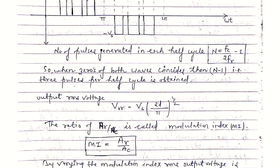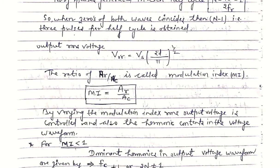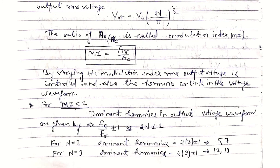The output RMS voltage is V0r = VS multiplied by the square root of the sum of pulse widths (2δ) divided by π over the half cycle, all raised to the power 1/2 for RMS calculation. The modulation index is defined as AR/AC, or equivalently VR/VC — the ratio of the amplitude of the reference wave to the carrier wave. By varying the modulation index, the RMS output voltage is controlled, and the harmonic content in the output voltage waveform is also controlled.